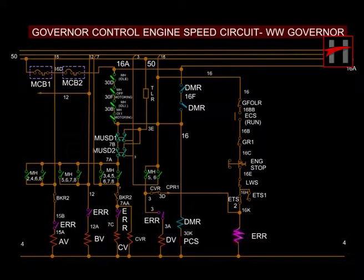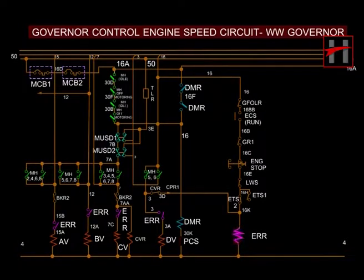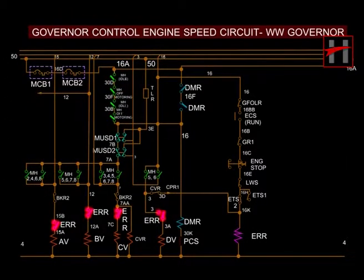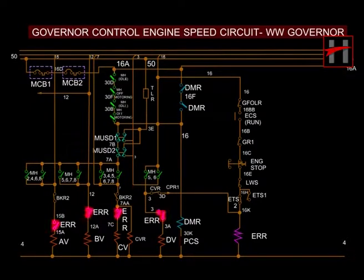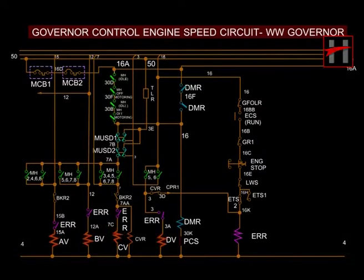The speed solenoids are energized via the engine run relay, or the ERR, in picked-up condition. Various interlocks of the ERR are used in the circuit to protect against faults. The energization position of the speed solenoids as per throttle handle positions is as follows.